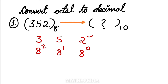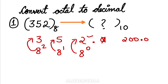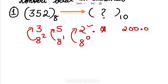Since there is no decimal point in the question, we don't need 8 power minus 1 or beyond. Just like 200 means 200.0, 352 means 352.0, so there is nothing after the decimal point to consider. We start directly from the right-hand side with 8 power 0, 8 power 1, 8 power 2, and so on. Then we multiply and add — you can start from left or right, anything is fine.